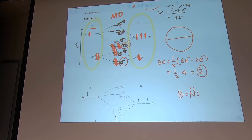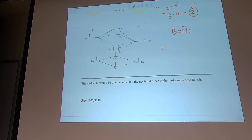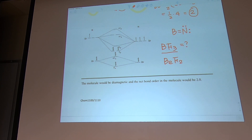But what about boron? Boron does not satisfy the octet rule. Have you seen the compound BF3? And beryllium with two fluorides, BeF2? These are exceptions to the octet rule.